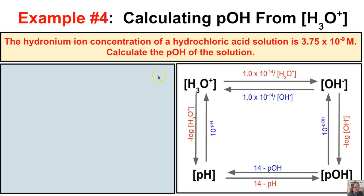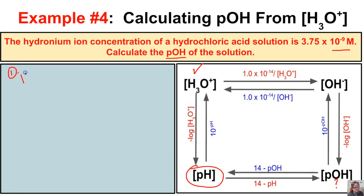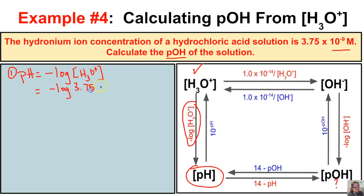In this fourth example, the hydronium ion concentration of a hydrochloric acid solution is 3.75×10⁻⁹ moles per liter, and we need to figure out the pOH. In the first step, we find the pH by taking the negative log of the H₃O⁺ concentration: −log(3.75×10⁻⁹) = 8.43.